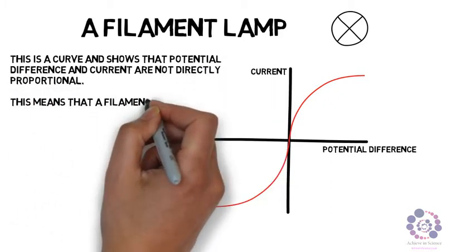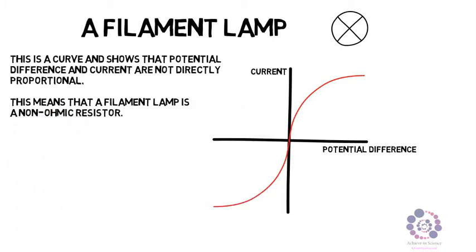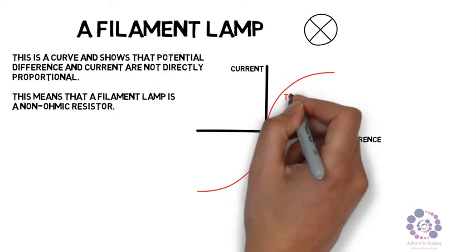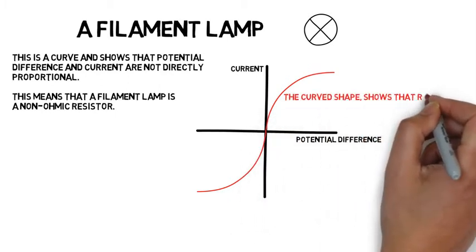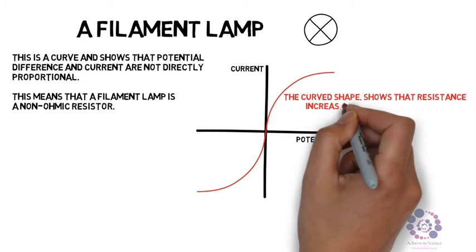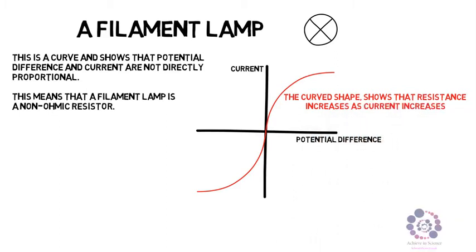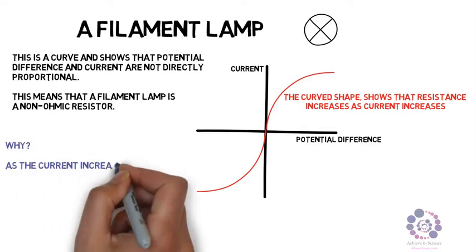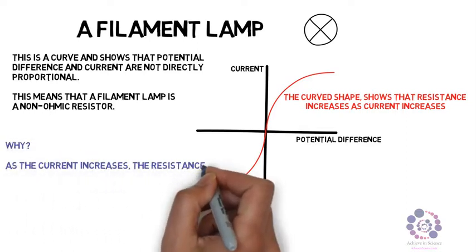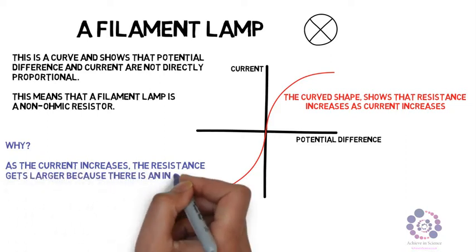Now why is it curved? The curve shows that the resistance increases as the current increases. This is a mirror image for both the positive potential difference and the negative potential difference. As the current increases, the resistance gets larger because there is an increase in temperature within the filament.